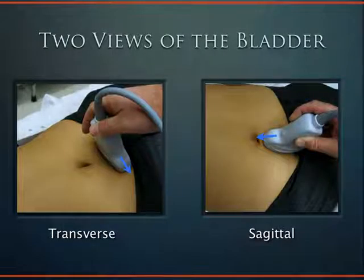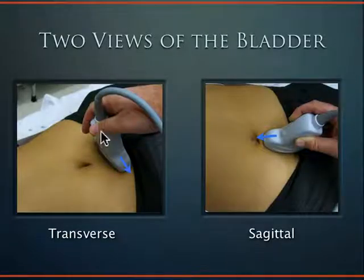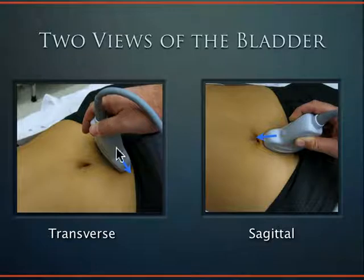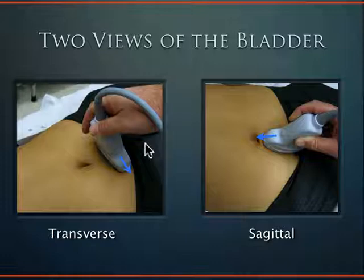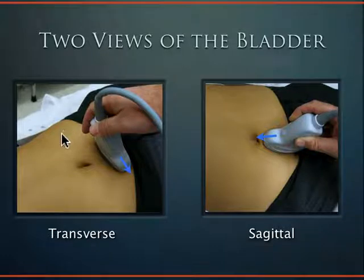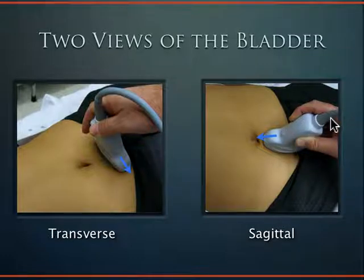There are two views of the bladder: the transverse view with indicator to the patient's right, and the sagittal view with indicator to the patient's head. The probe goes just below the umbilicus, but the bladder is actually down near the pubic symphysis. In clothed patients, you end up placing the probe a bit higher than the bladder, so to compensate you tilt the probe inferiorly — sending the sound down where the bladder actually is. Same in the sagittal view: rotate the cable to shine sound inferiorly.